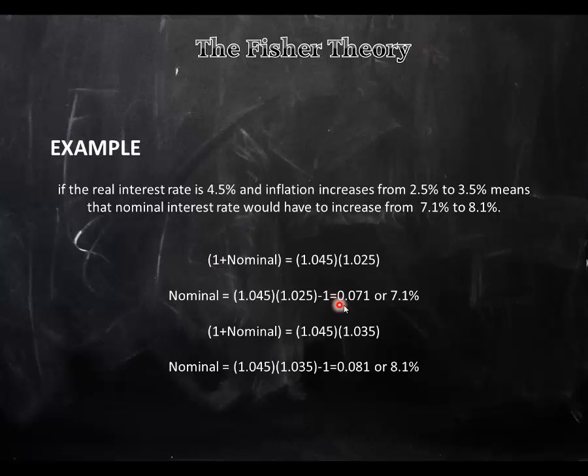So that gives us 0.071, which is 7.1%, and that's this one here. So we got the nominal rate for 4.5% with an inflation of 2.5%.